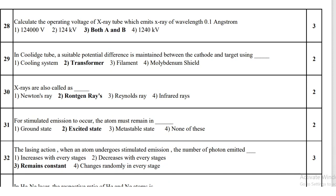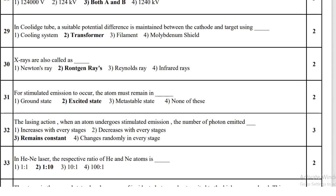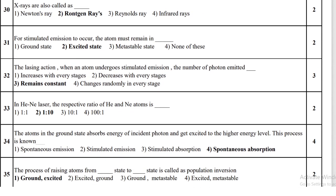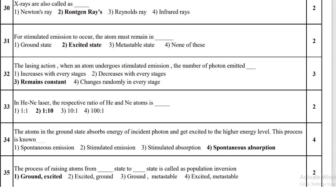In a Coolidge tube, a suitable potential difference is maintained between cathode and target using a transformer. X-rays are also called Röntgen rays. For stimulated emission to occur, the atom must remain in an excited state.